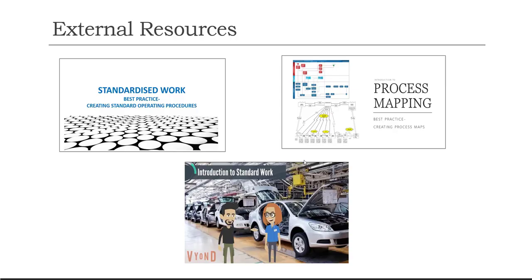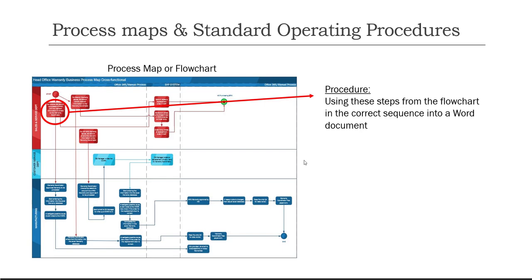There are a few valuable resources I've created that will help you understand the broader context of standard operating procedures. But in this tutorial, I'm going to be very specific to help you create your own procedures. The standard operating procedure is best as an outcome from a process map, just like the one shown here. A process map or flowchart is a set of steps drawn in a diagram with connectors from step to step. When we write a standard operating procedure, we're using the steps from the process map in the correct sequence. If we don't have a process map, we can still create the document, but it's much easier with one — otherwise we might miss a valuable step or the correct sequence.